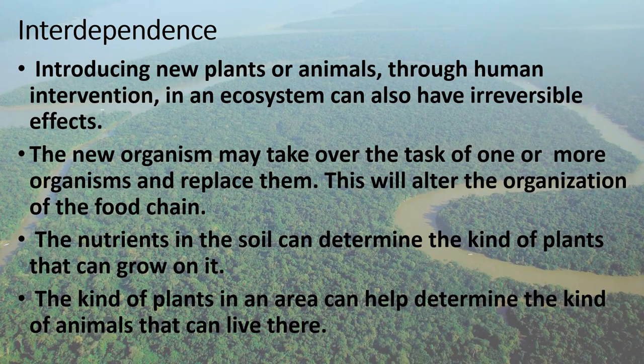The introduction of new plants or animals through human intervention in an ecosystem can also have irreversible effects. An example of this is the introduction of the janitor fish in the Pasig River ecosystem. Initially, it was done to eliminate the sludge forming at the bottom of the river. But since the janitor fish multiplied at a faster pace than the natural or original animals in the ecosystem, they took over some of the tasks or niche of the other animals and replaced them, which altered the organization of the food chain in the ecosystem.